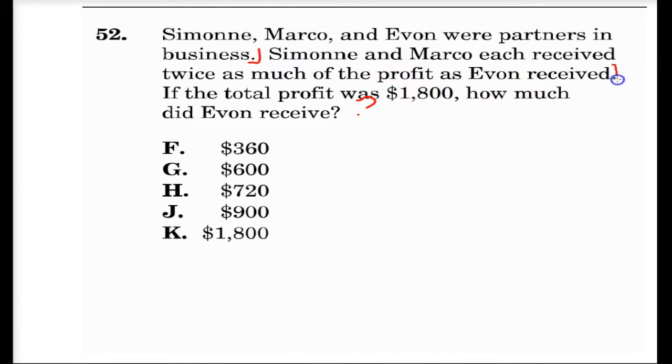So here we're going to stop and do stuff. Because from that sentence, we know that Simone and Marco each received twice as much as Evan, which means that Simone and Marco received as much as each other, and again, twice as much as poor old Evan. Must have been like a late adapter to the company, so didn't get as much profit.